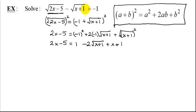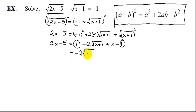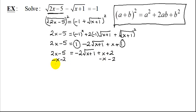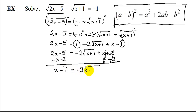Notice I've gone from two radicals to one radical. So how do we solve a one-square-root equation? We isolate the radical and then square both sides. On the right-hand side I have two like terms I can combine: 1 plus 1 is 2. Now I isolate the radical by subtracting x from both sides and subtracting 2, giving me x minus 7 equals negative 2 times the square root of x plus 1.